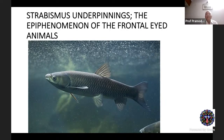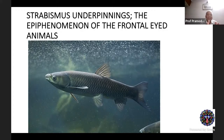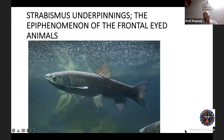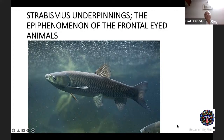Our eyes moved forward; we became frontal-eyed animals and started fusing images. For images to be fused, we need very accurate and precise coordination between the extraocular muscles, and when this fails we have strabismus. The obliques, which were very important in lateral-eyed animals like fish, were relegated to a side role because torsion became a liability when we came to binocular single vision. So torsion has been put to the back seat and the recti have taken over most of the functions of motility.